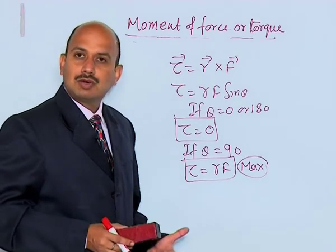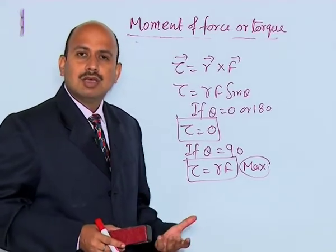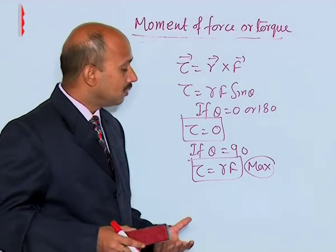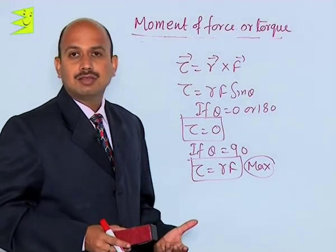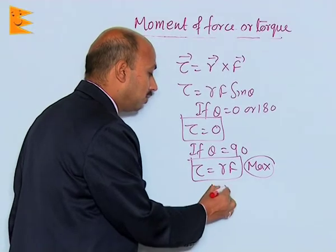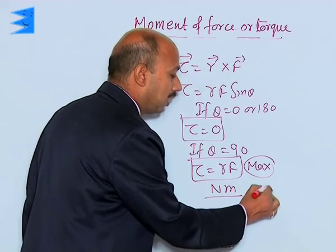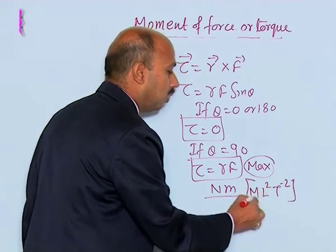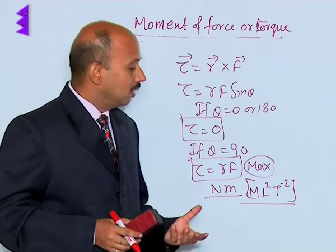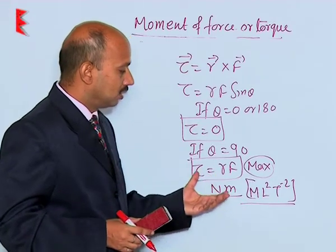Torque is a vector quantity. It may be in the clockwise or anticlockwise direction. Conventionally, anticlockwise rotation is taken as positive torque and clockwise rotation as negative torque. The unit of torque is Newton meter. Its dimensional formula is M L squared T to the power minus 2, which is similar to that of work. However, work is a scalar quantity while torque is a vector quantity — that is the key difference between work and torque.